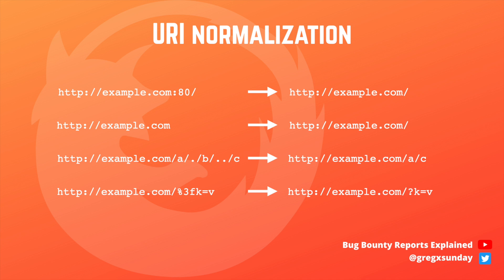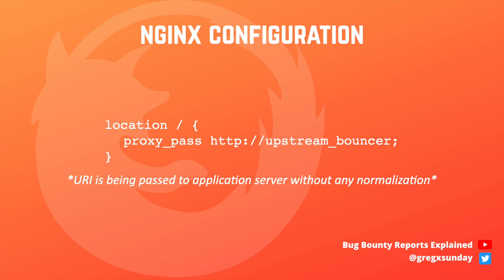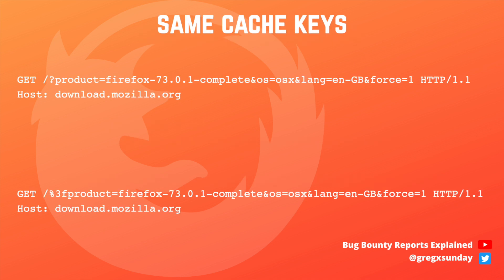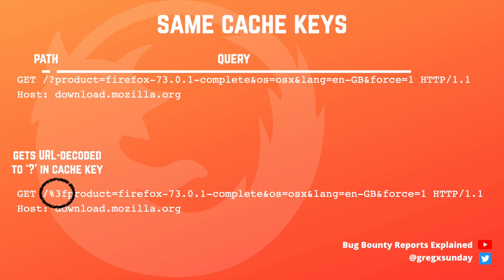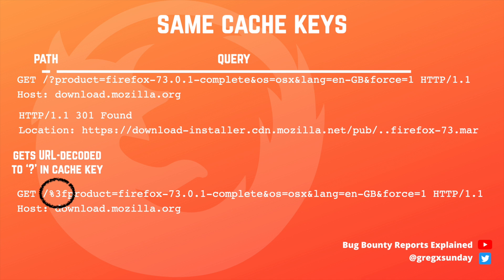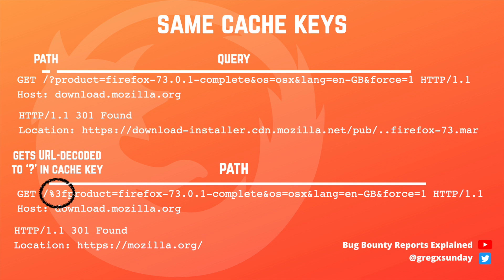URI normalization is a process that caches and normalizes URIs that are written slightly differently but ultimately point to the same address — for example, by URL-decoding the address. Firefox servers use Nginx for caching, and the problem was that Nginx would forward the request to the application server without any normalization, while the cache key is URL-decoded. This means both requests would have the same cache key, but only the first one is valid — it's sent every time you start Firefox to check for updates. The second one, without URL decoding, is considered a completely invalid path, causing the server to redirect the user to the main Mozilla page instead of returning a 404.